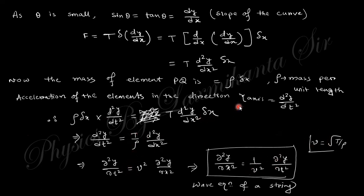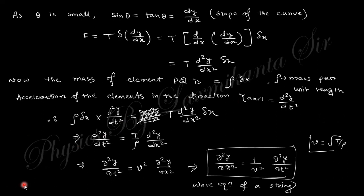This gives the wave equation within the string: d²y/dt² = v² times d²y/dx². This derivation was done in your previous semester. Now we need to solve this equation.